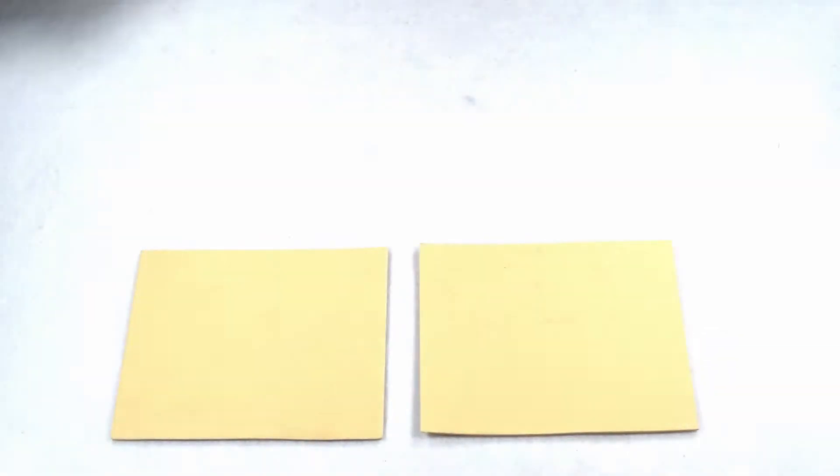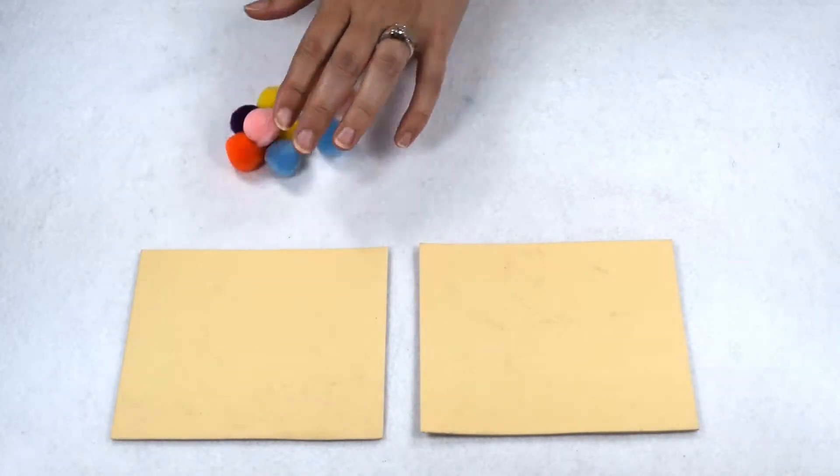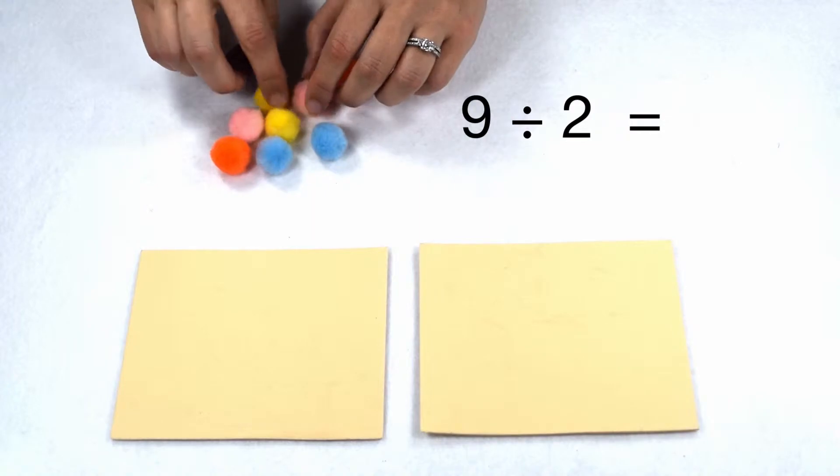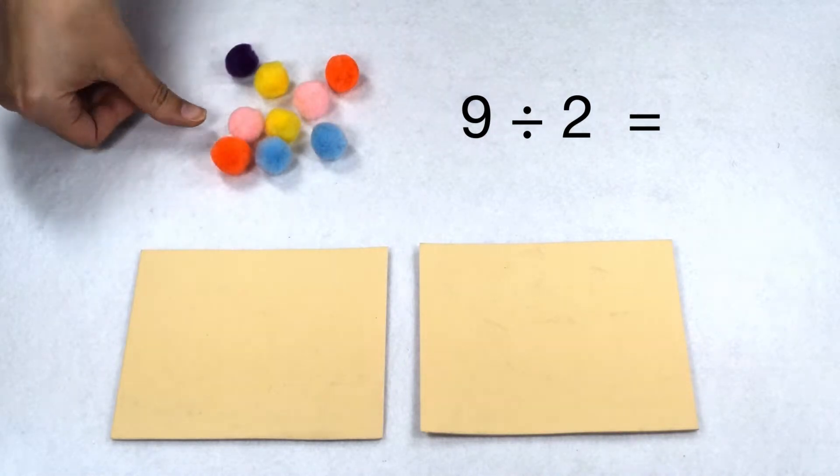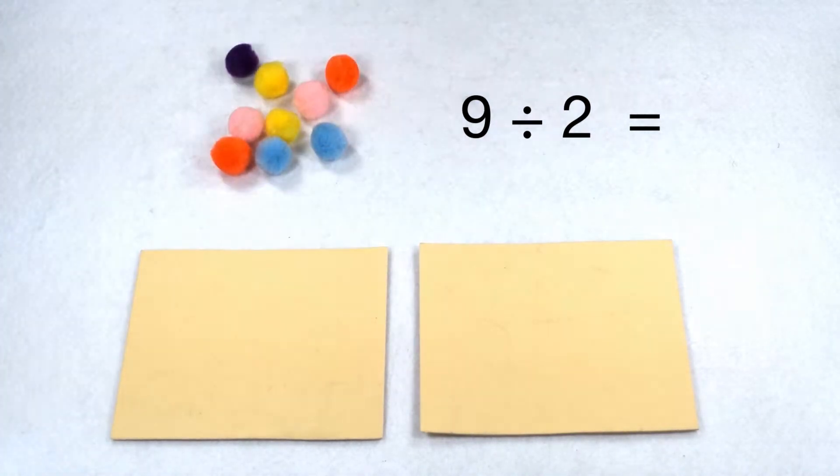But what if I'm working with a number that isn't an even number? What if we start with 9 items? 9 doesn't end in 0, 2, 4, 6, or 8. So what happens when I want to solve 9 divided by 2?